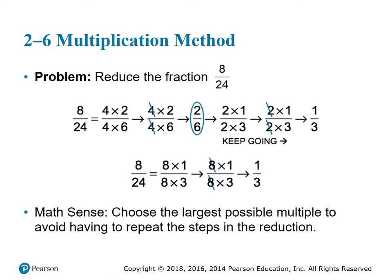Is 2/6 reduced as far as it can go? Is there another number that goes into both 2 and 6 evenly? Yes — it's 2. We perform the step again: 2 times 1 in the numerator and 2 times 3 in the denominator. Cross out the matching 2s, and we're left with 1/3. That's as low as it can go.